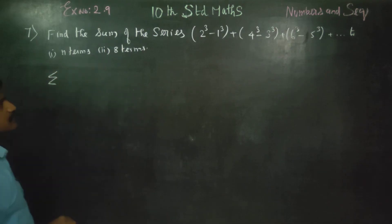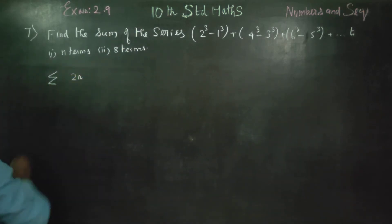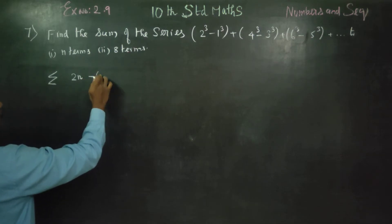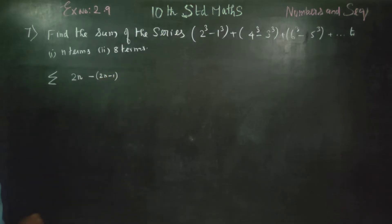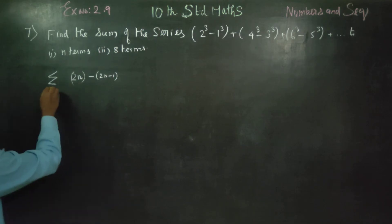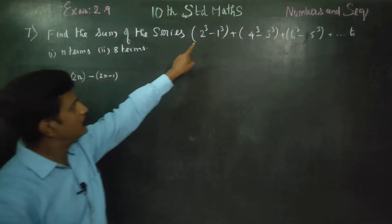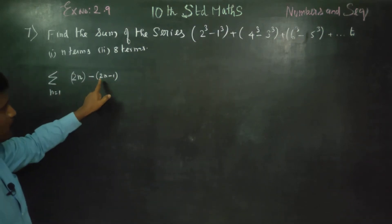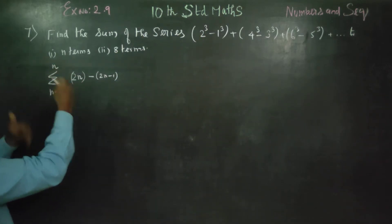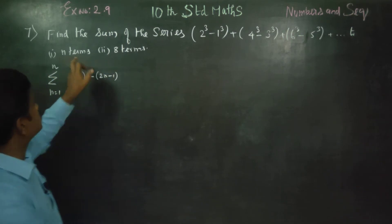Sigma means addition. The even number formula is 2n. The odd number formula is 2n minus 1. So n is equal to 1, 2, 3... giving even numbers 2, 4, 6... and corresponding odd numbers 1, 3, 5...